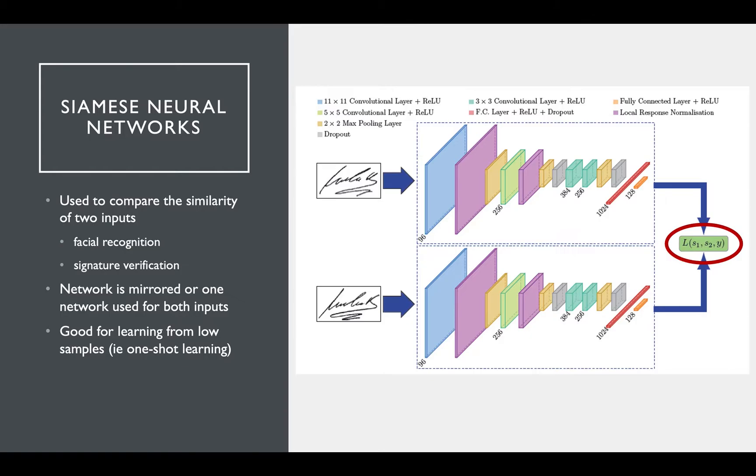In traditional classification, every person would need to be a separate class and the network would need to individually distinguish them. This would be impractical to train because there wouldn't be enough data to learn the embeddings to represent every signature.